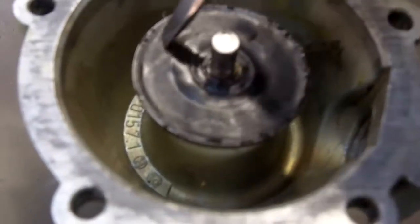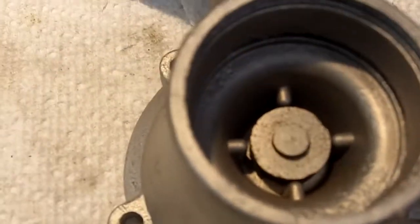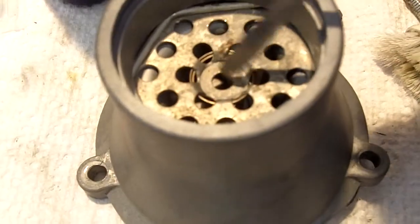In addition to this seal right here, let me get another unit. Inside, this is what it looks like inside, underneath the air filter. Underneath there is a disc, and underneath this disc is another rubber sealing surface.